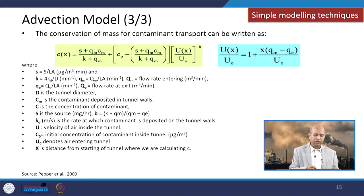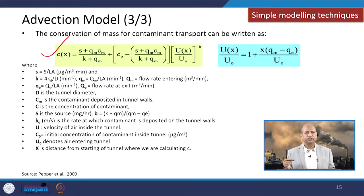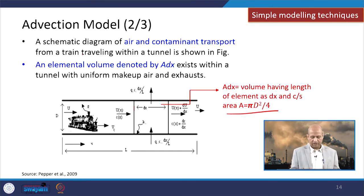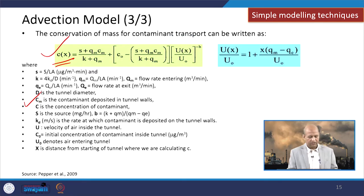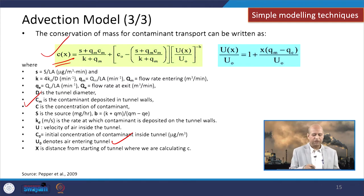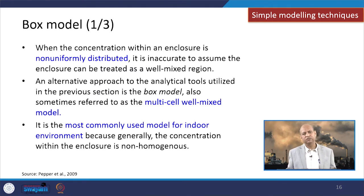The advection model uses those equations and ultimately arrives at a final equation for estimating concentrations. Different parameters include contaminant deposited in tunnel walls Cm, C as the concentration of the contaminant at distance x (denoted Cx), l as the length of the tunnel, u as the velocity of air inside the tunnel, u0 as the air velocity at the entrance of the tunnel, and x as the distance from the start of the tunnel to the point where we want to estimate the concentration. All these parameters are used to estimate concentration through the advection model.